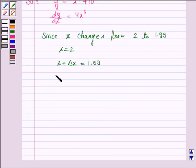So now since x is equal to 2, we have 2 plus delta x is equal to 1.99. So this implies delta x is equal to 1.99 minus 2,